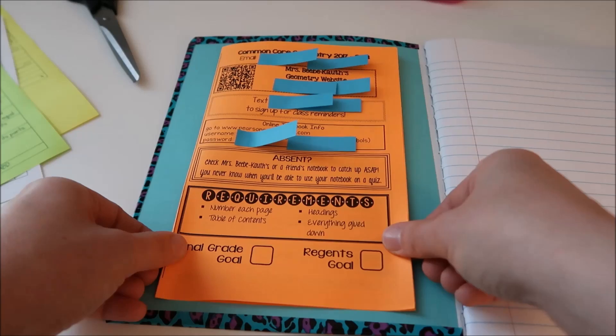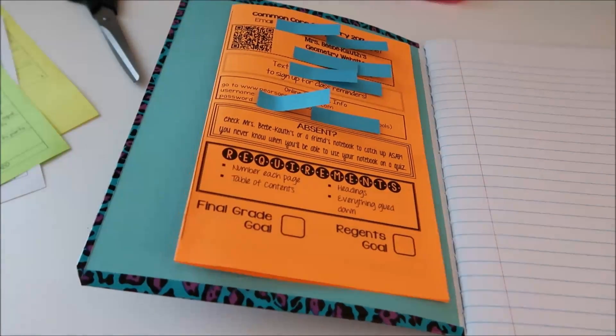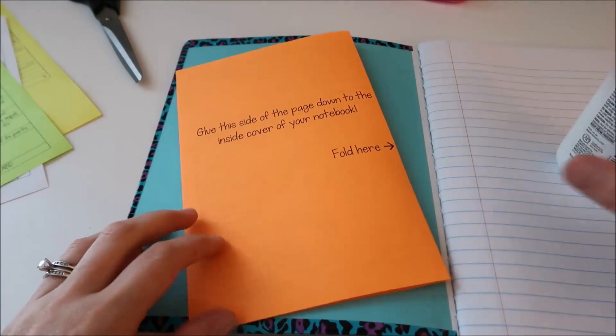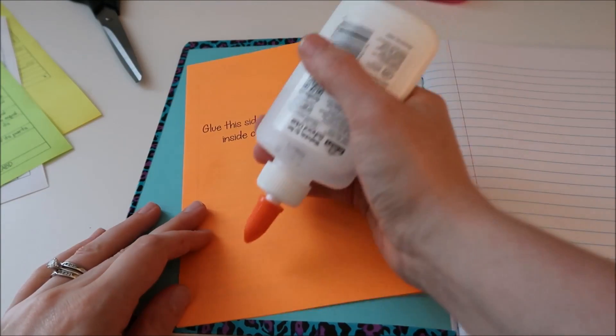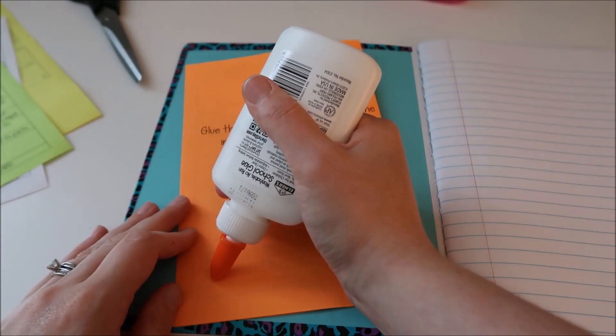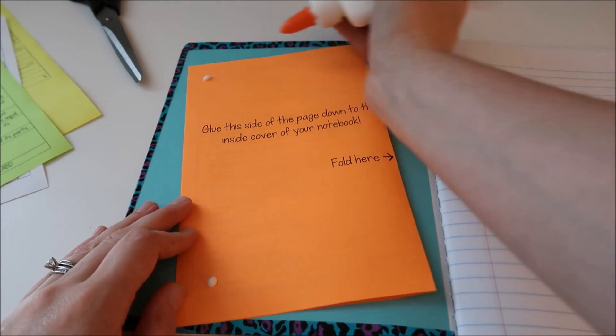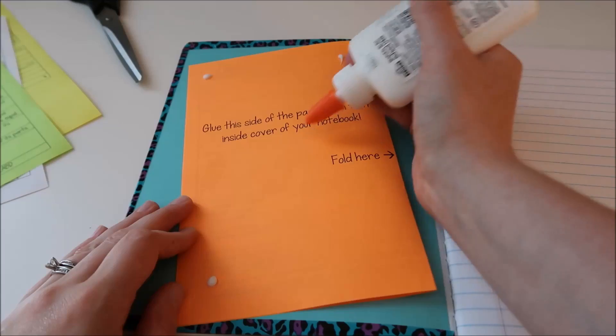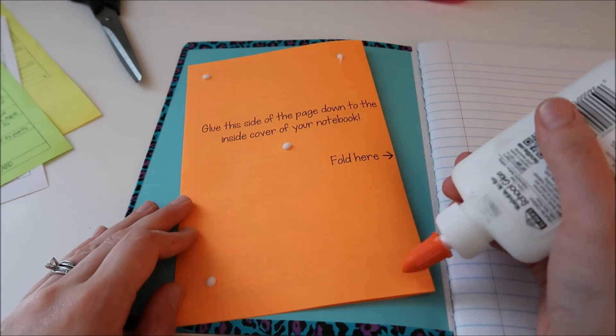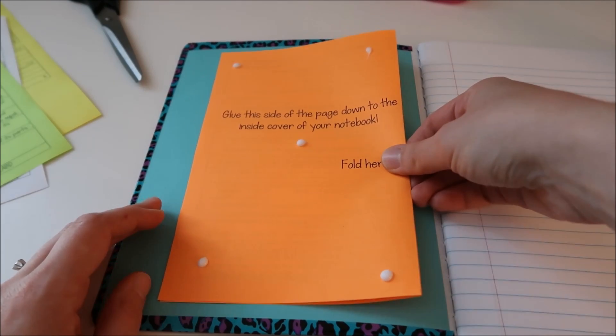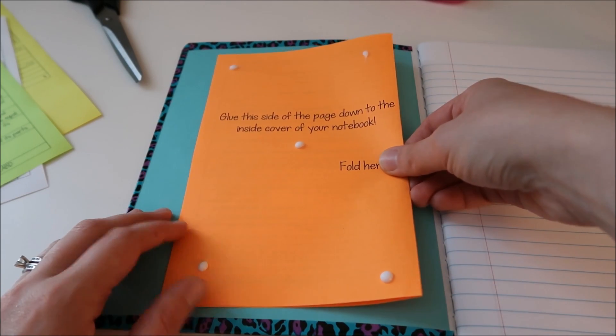So this gets folded over and then I'm going to glue it right on my inside cover. A big debate amongst interactive notebook users is what adhesive is best. A lot of teachers will say that they only use glue sticks and I can tell you that a glue stick after two to three months the glue completely dries up and the pages will start to fall out. A lot of teachers say that they will only ever use tape which is really expensive.